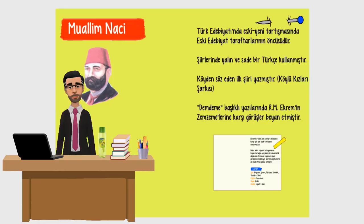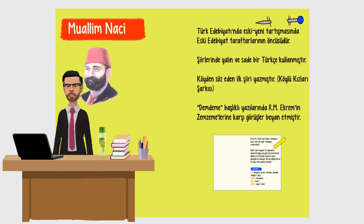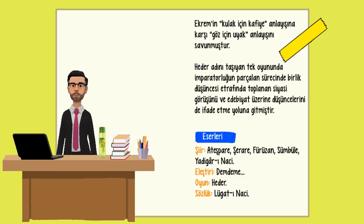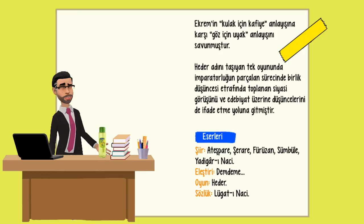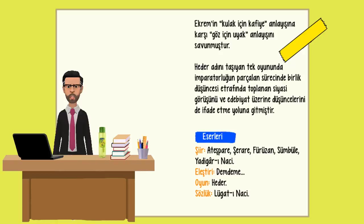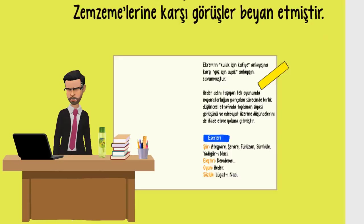Şimdi de Muallim Naci'ye bakalım. Türk Edebiyatında eski-yeni tartışmasında eski edebiyat taraftarlarının öncüsüdür. Şiirlerinde yalın ve sade bir Türkçe kullanmıştır. Köyden söz eden ilk şiiri yazmıştır. Demdeme başlıklı yazılarında Recaizade Mahmut Ekrem'in Zemzeme'lerine karşı görüşler beyan etmiştir. Ekrem'in kulak için kafiye anlayışına karşı, göz için uyak anlayışını savunmuştur. Heder adını taşıyan tek oyununda imparatorluğun parçalanan sürecinde birlik düşüncesi etrafında toplanan siyasi görüşünü ve edebiyat üzerine düşüncelerini de ifade etme yoluna gitmiştir. Eserleri — Şiir: Ateşpare, Şerare, Firuzan, Sümbüle, Yadigâr-ı Naci. Eleştiri: Demdeme. Oyun: Heder. Sözlük: Lügat-i Naci.